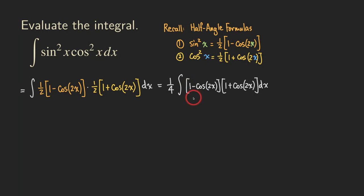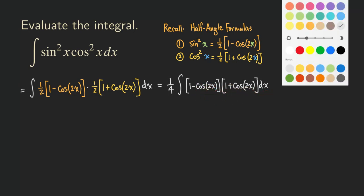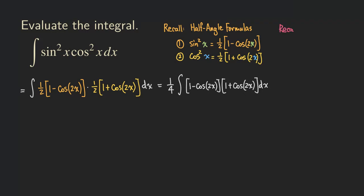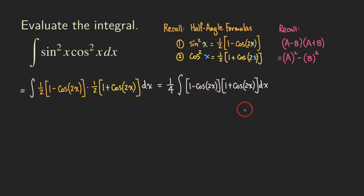Recall that multiplying an expression by its conjugate gives a difference of squares: (a − b)(a + b) = a² − b². We have exactly that situation here, with a = 1 and b = cos(2x). So we square the 1 and subtract the square of cosine 2x.